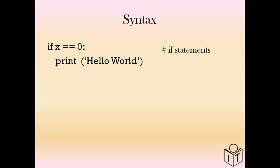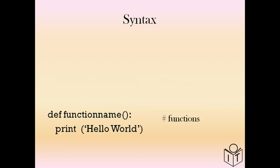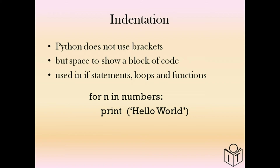There's a way of writing the syntax when you're coding, and in Python it's slightly different from other languages. Here are some examples: we have an if statement, a for loop, and a small function. One thing you'll notice is there's a slight gap at the beginning of some lines of code — that's called an indentation. In Python, a block of code doesn't use brackets; it uses this space.